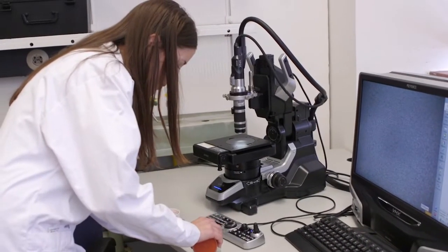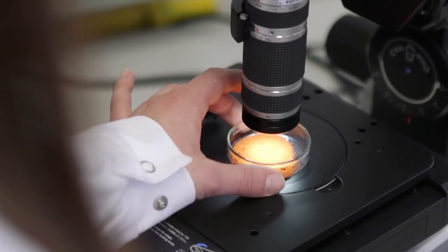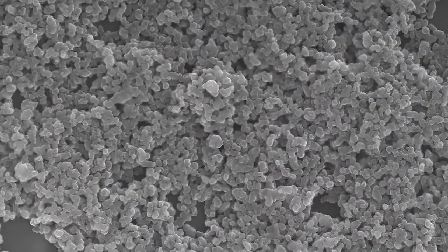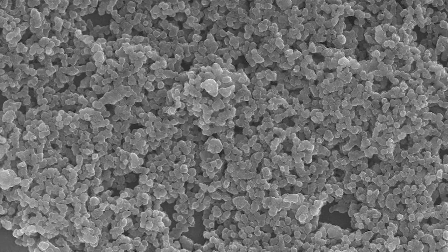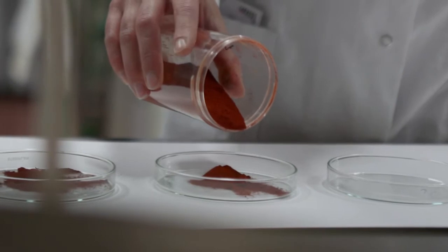This is why we are exploring ways of optimizing the production processes. One possibility is to introduce dopants into the crystal lattice of the pigments. This allows us to change the light absorption properties of the pigments so that we really achieve these more brilliant red tones.